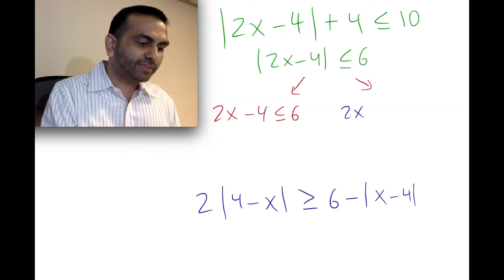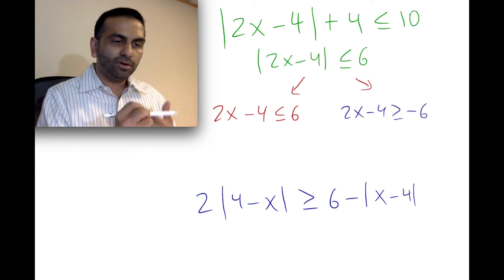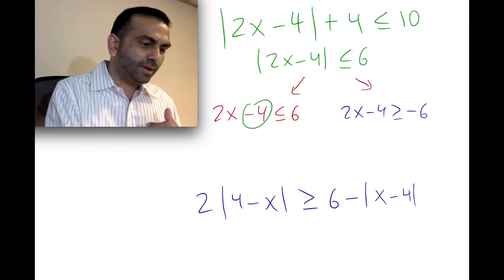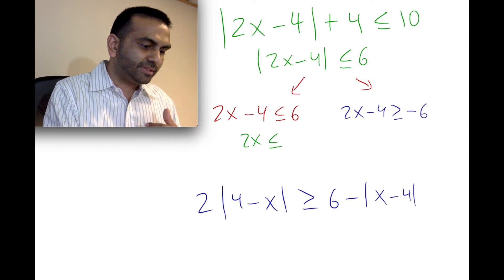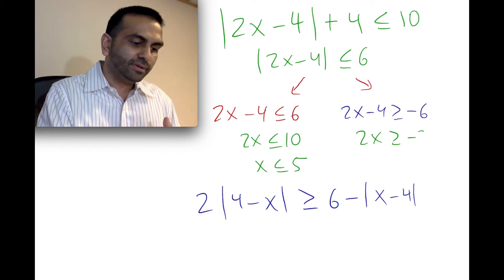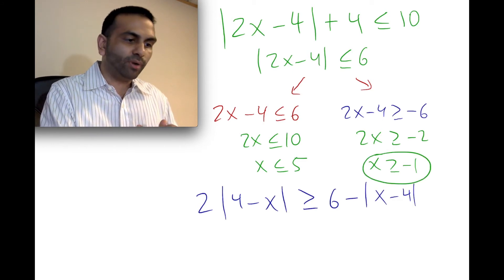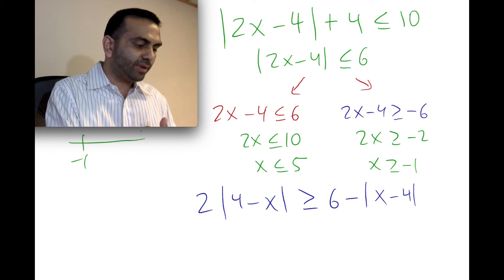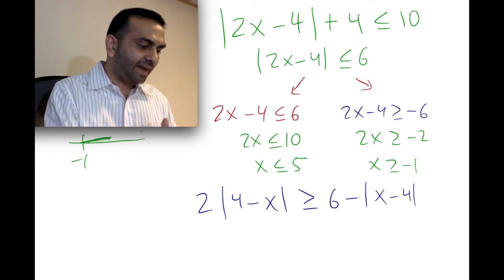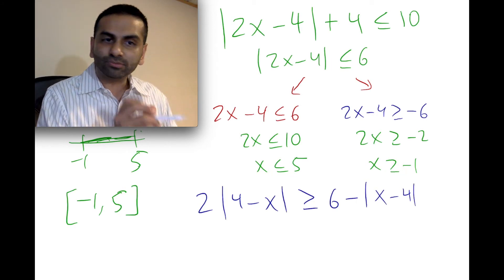For the second trajectory, flip the sign and set the right-hand side to negative six: 2x minus four greater than or equal to negative six. Solving the first: add four to both sides gives 2x less than or equal to ten, so x less than or equal to five. Solving the second: negative six plus four is negative two, divide by two gives x greater than or equal to negative one. So the answer is the interval [negative one, five], with square brackets because the inequalities include equals.